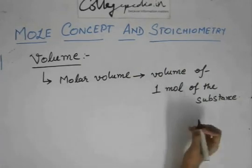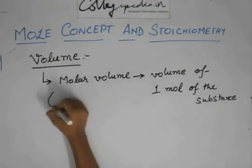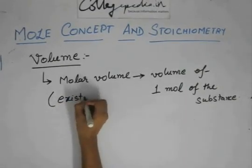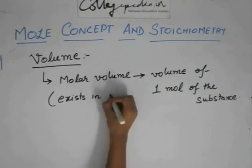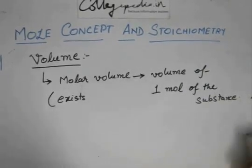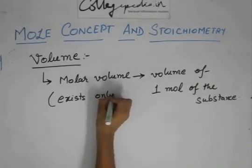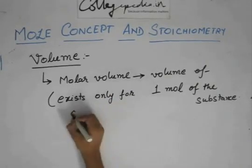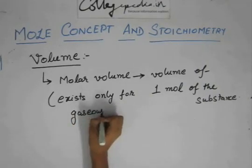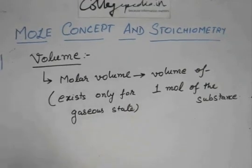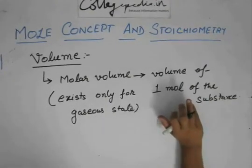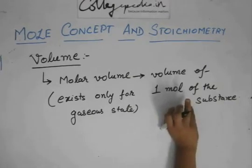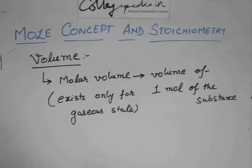Nothing very interesting in that — it is just the volume of one mole of that substance. The interesting part is that molar volume exists for all states, but we should take it only for the gaseous state. You can always have the volume of one mole of any solid or liquid, but we are more concerned with the molar volume of the gaseous state. The molar volume of solid and liquid are not of much concern to us, so we should take it only for the gaseous state.